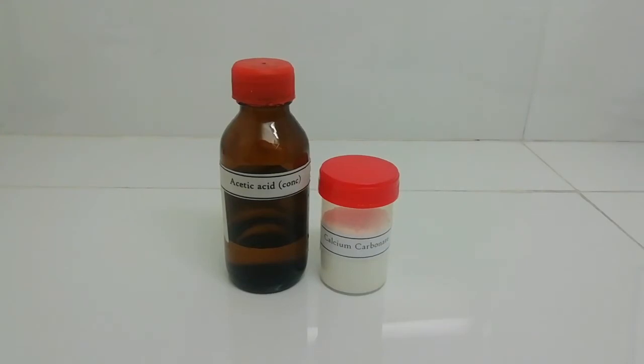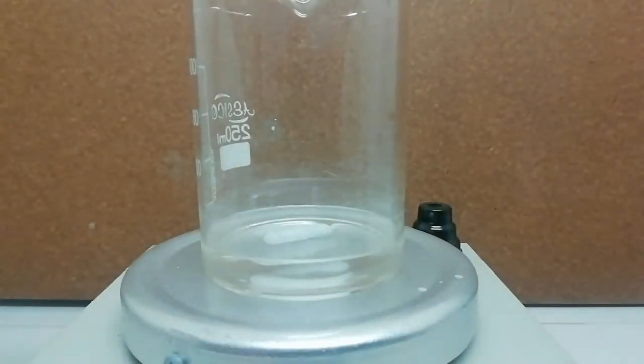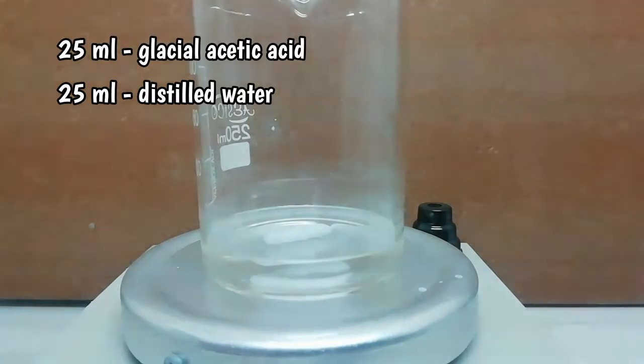I am going to take about 50 ml of it. Right now I have taken a 200 ml beaker and there is 25 ml of distilled water. Now I am going to add 25 ml of concentrated acetic acid.